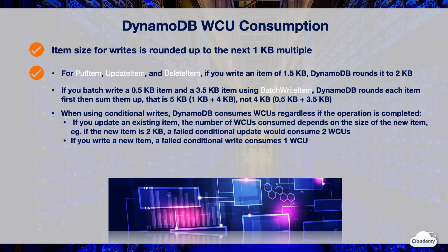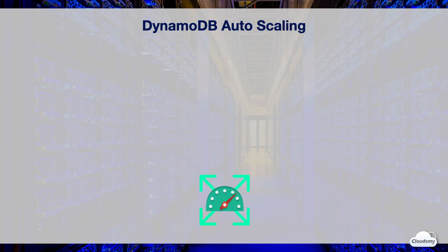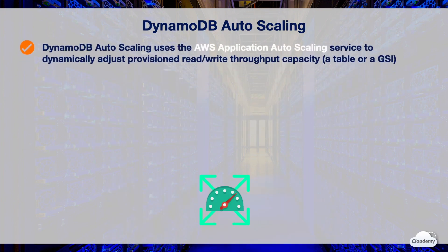DynamoDB auto scaling uses the AWS Application Auto Scaling service to dynamically adjust provisioned read and write capacity on your behalf. Auto scaling automatically increases the capacity of the table or GSIs to handle sudden traffic increases without throttling. It also decreases the capacity when the workload decreases, so you don't pay for unused capacity.